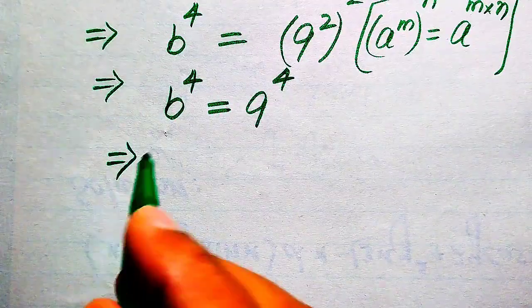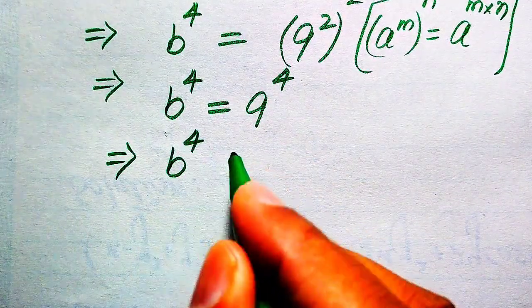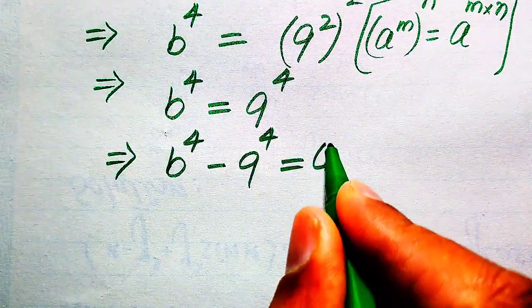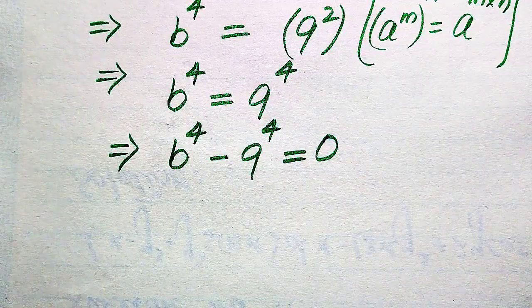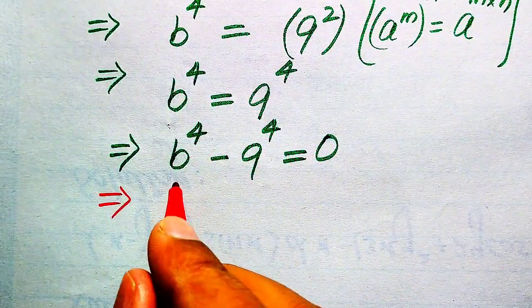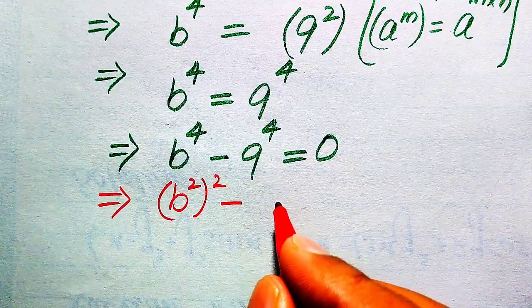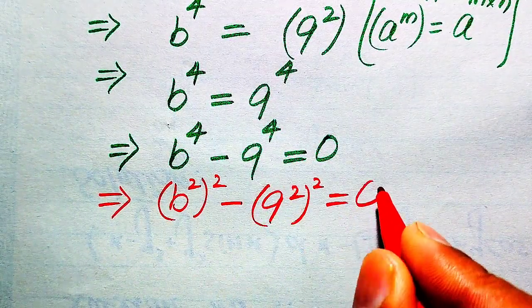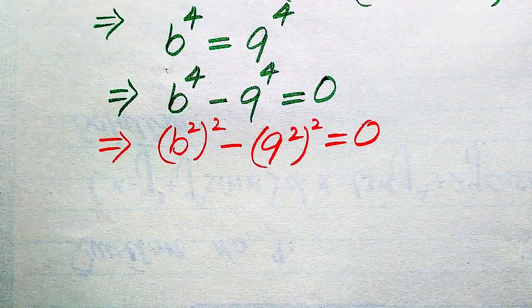In the next step, we move 9⁴ from the right hand side to the left hand side, giving b⁴ minus 9⁴ equals 0. We then rewrite this equation by expressing b⁴ as (b²)² and 9⁴ as (9²)², so the equation becomes (b²)² minus (9²)² equals 0.